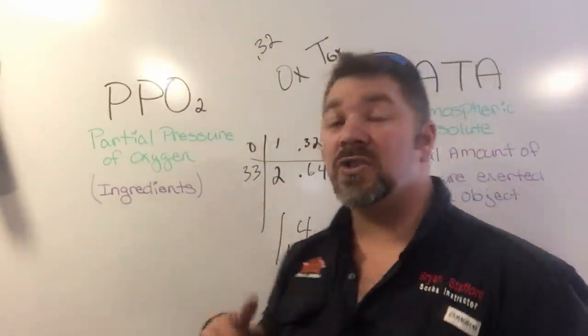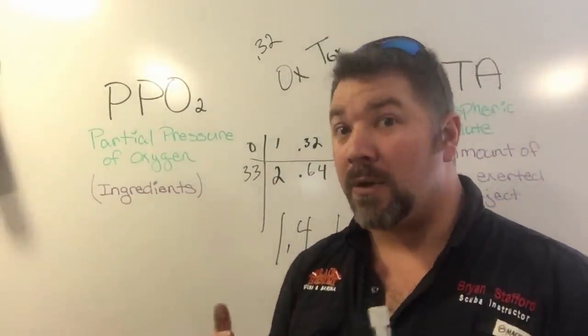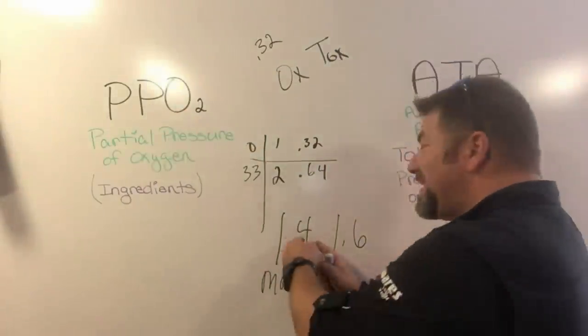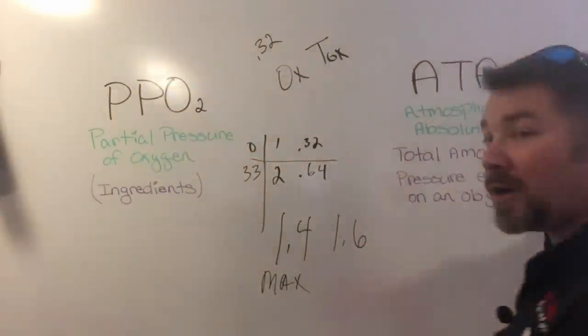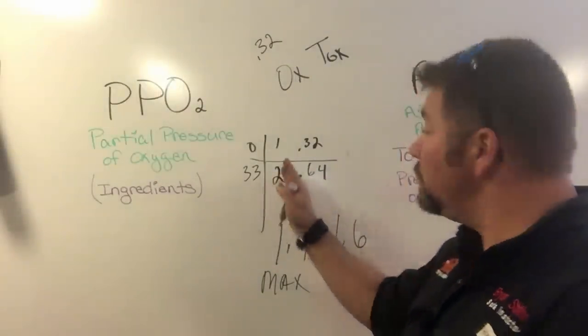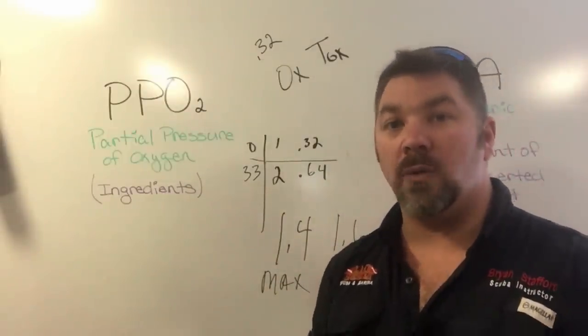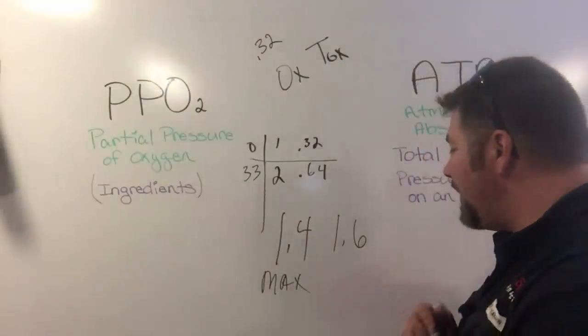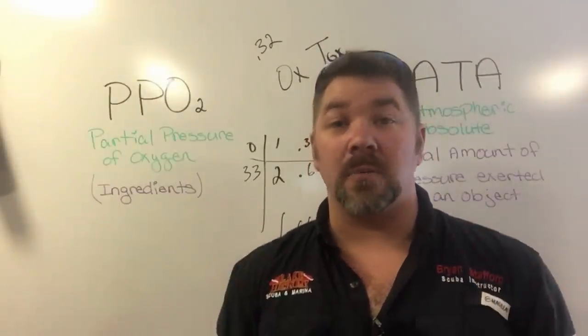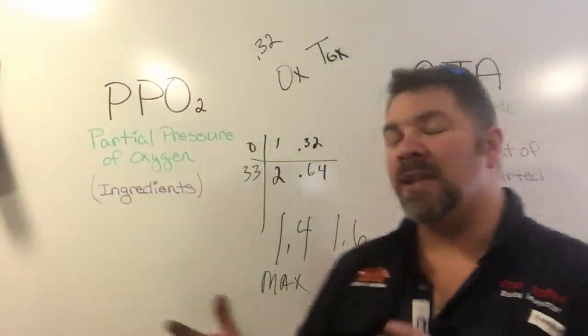We also have a number of 1.6. In recreational standpoints, we want to think of 1.4 as the maximum. We do not want the partial pressure of oxygen to exceed that 1.4. We use our ATA calculation and times it by whatever our percentage of oxygen is. You never want to exceed that 1.4. But let's say we do exceed that 1.4—we made a mistake, we weren't paying attention to our depth. We have a contingency here, and the contingency is kind of an 'oops factor.'